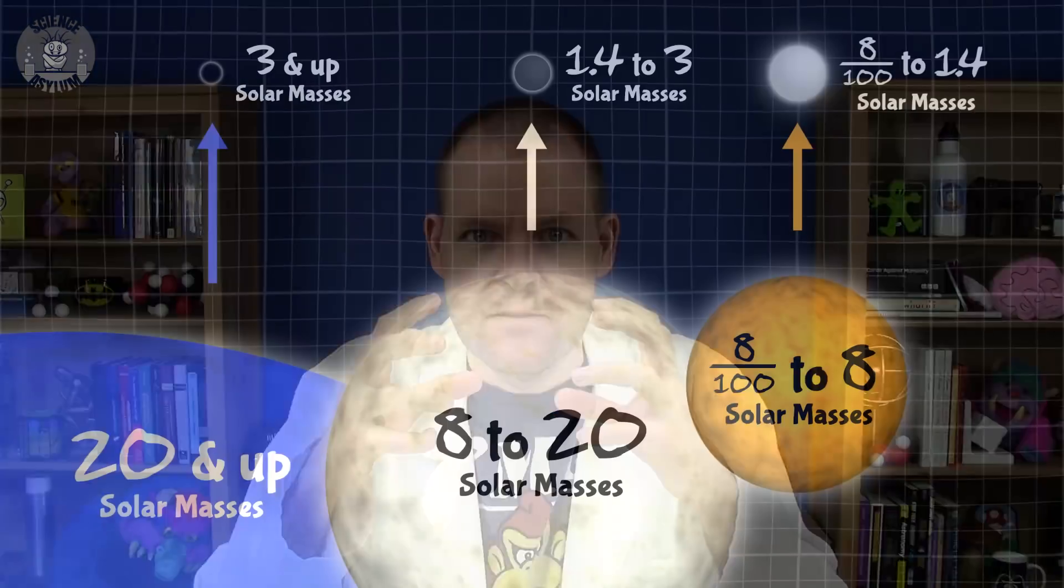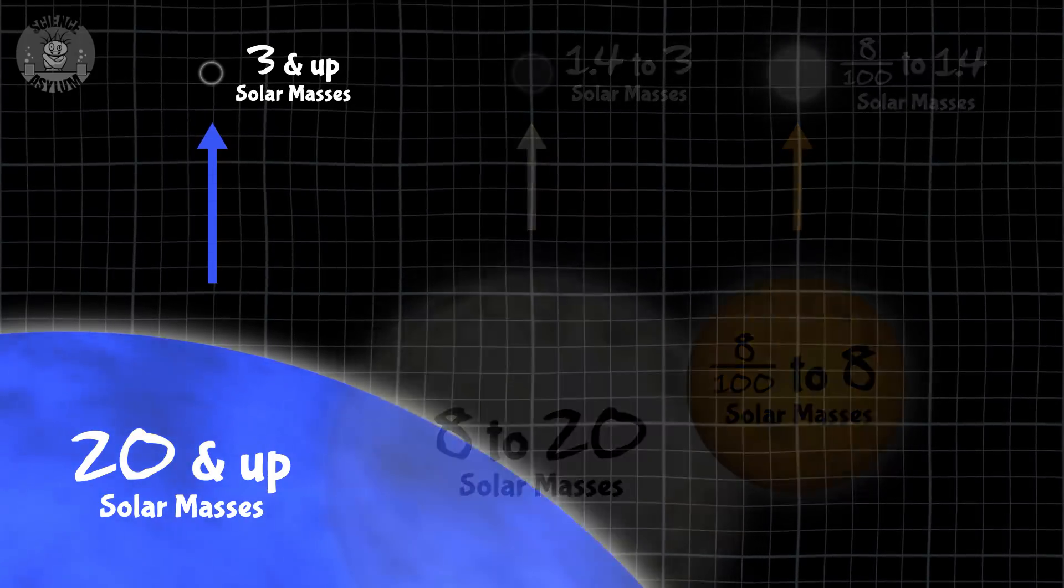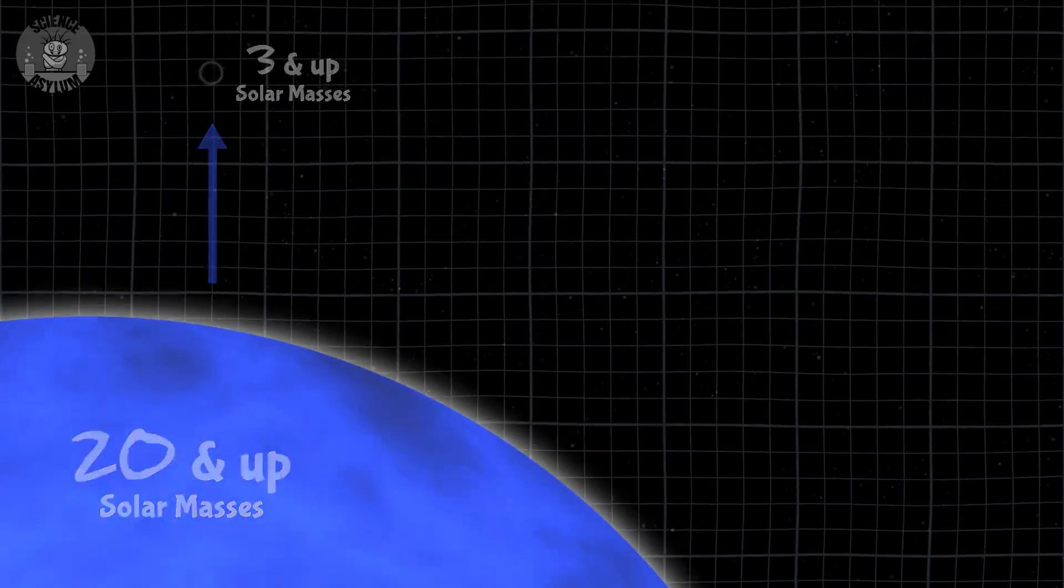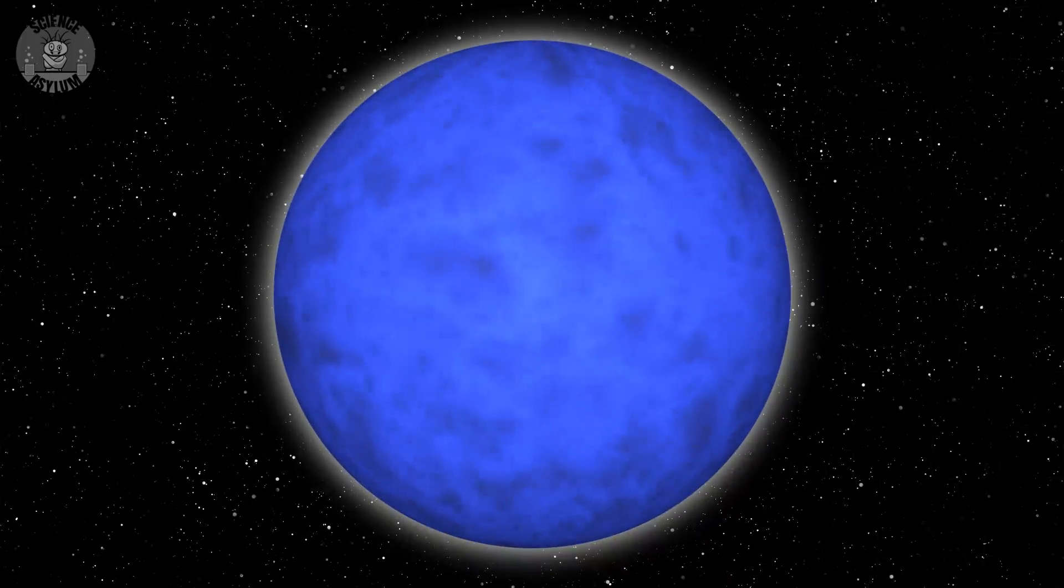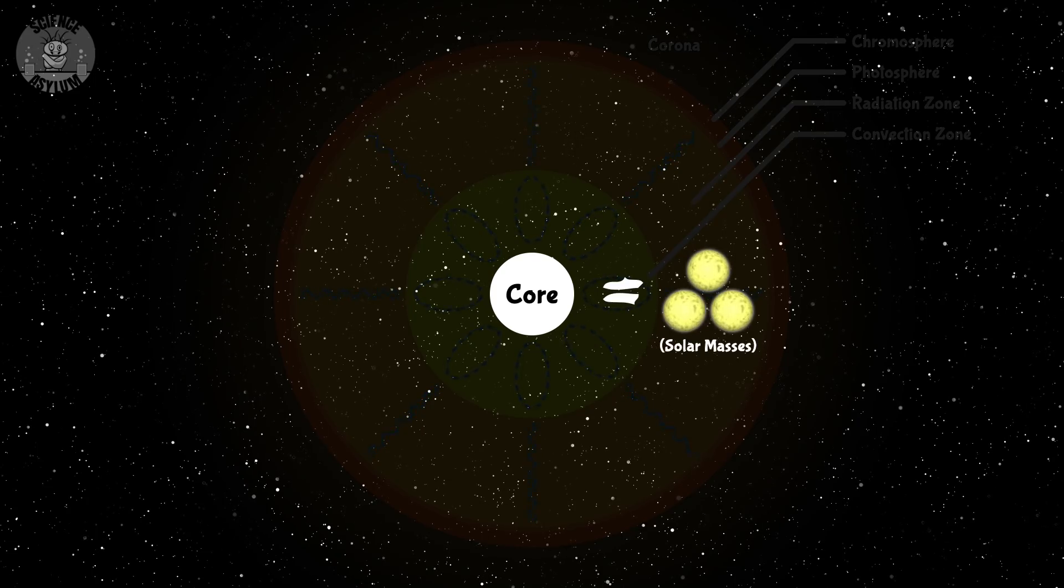A black hole forms when you get enough mass into a small enough volume. The best mechanism the universe has for that is gravity. Say you've got a star with a sufficiently large mass, anything greater than 20 times the mass of our Sun ought to do it. Now, not all of that mass is going to form a black hole. Only the stellar core will, which is only about 3 times the mass of our Sun.